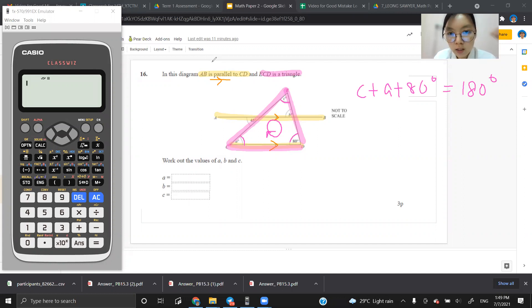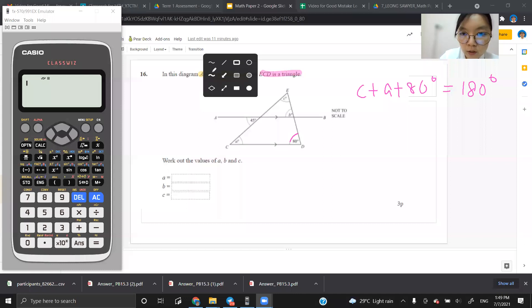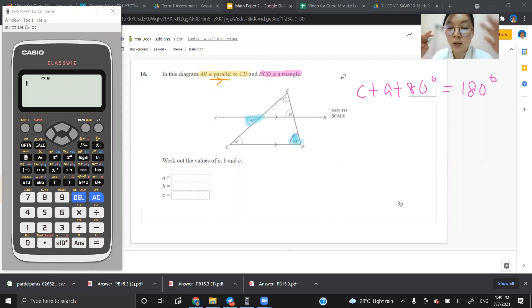Next. The third one is hidden in the picture. Can you see in the picture itself, there are already angles there. So all these are hints, trying to give you the answer. So I have 45 degrees here, I have 80 degrees here. So these numbers are going to help you.